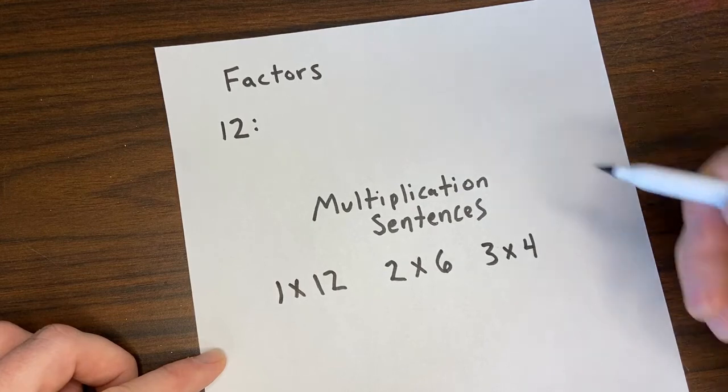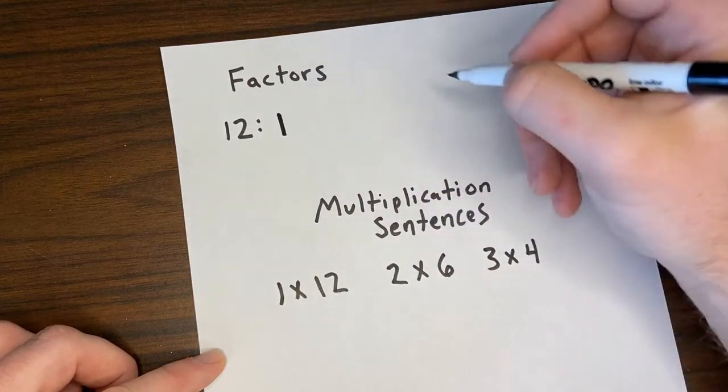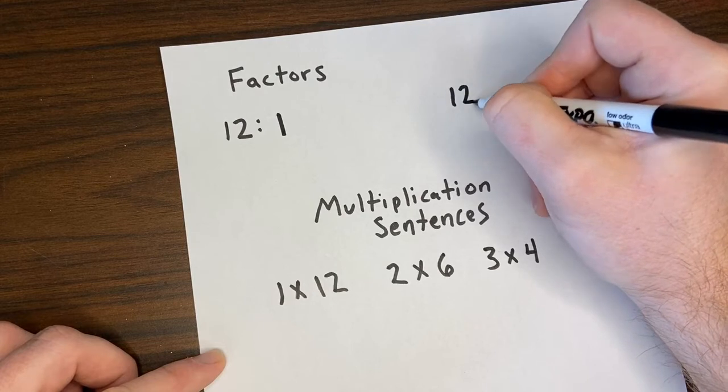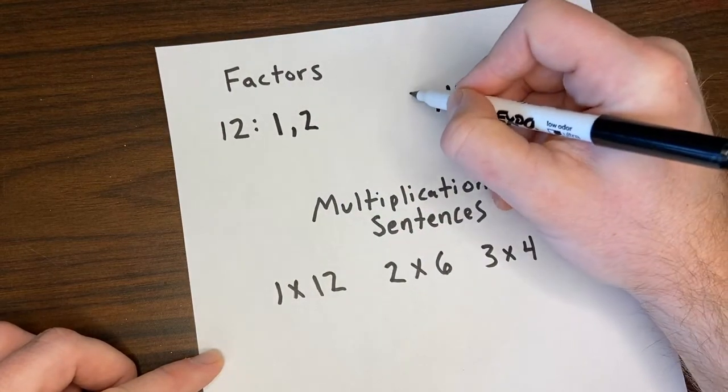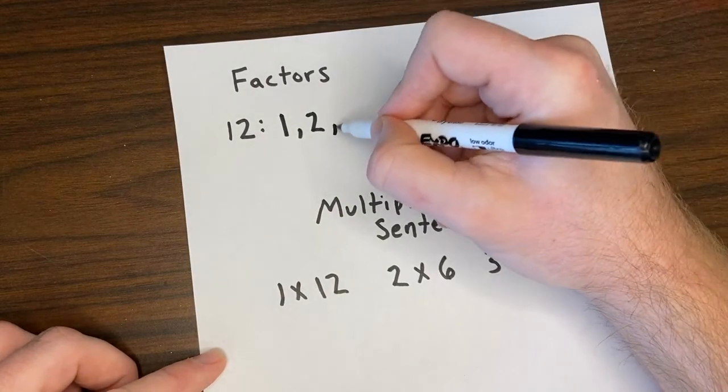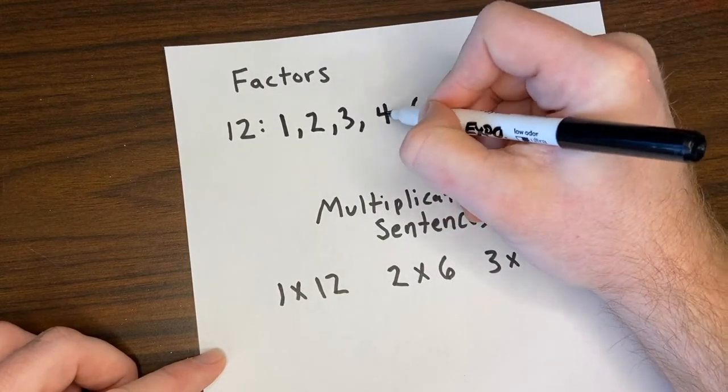Now I'm going to take those factors from down below. I'm going to pull them up in their pairs. We have 1 and 12, 2 and 6, again I'm listing these from least to greatest, and 3 and 4.